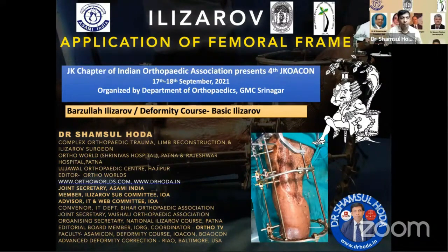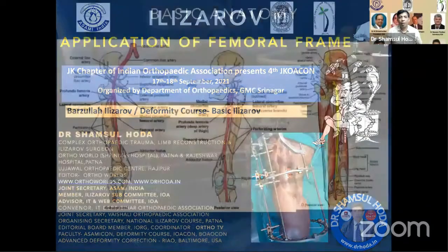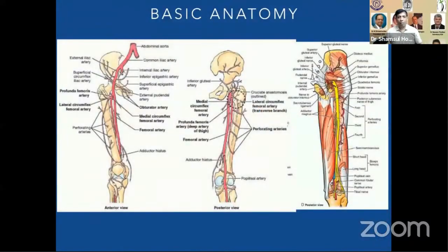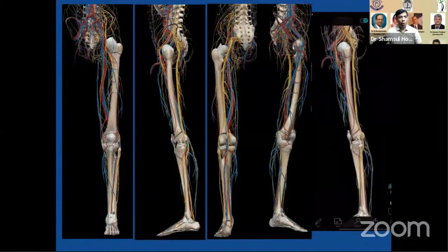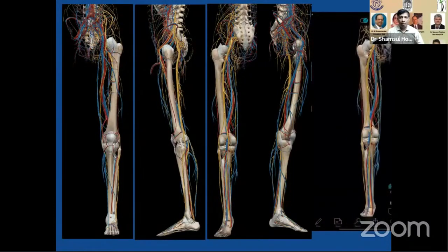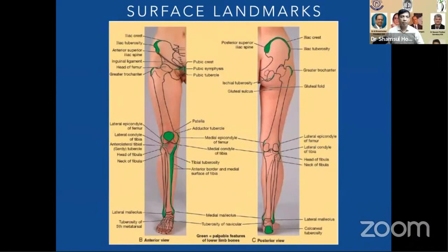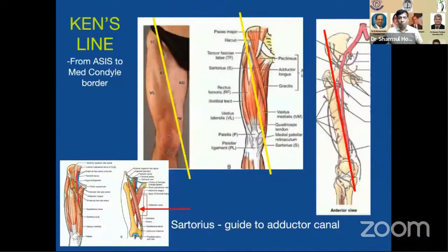As already discussed, we must have basic knowledge of the anatomy and the neurovascular bundle to avoid any complications. It seems complex, but when we have good knowledge of anatomy it becomes very easy. For that we need basic knowledge of surface anatomy of the femur. The key is Ken's line — a straight line from the anterior superior iliac spine to the middle condylar border. Lateral to this is a very safe zone in the proximal and distal part; the posterior part is unsafe. You can go safely along this Ken's line.